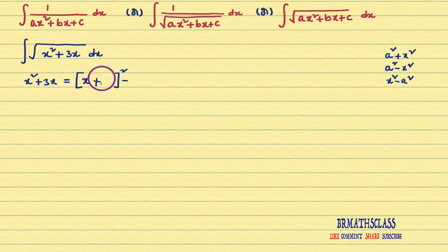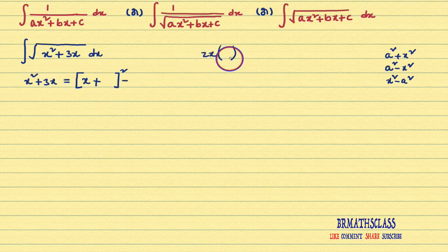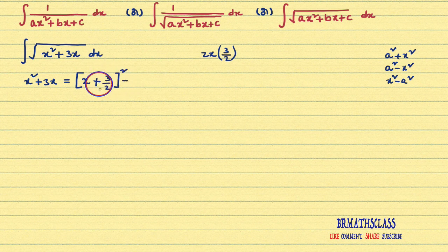Now you need to find this number. To find this number, we have a trick: you always keep 2x in your mind. 2x into what number will give you 3x? You need to think. That is 3/2. If I write 3/2, the 2 will get cancelled and I will get 3x only. So here I will write 3/2, minus the square of this number, which is 3/2 whole square.